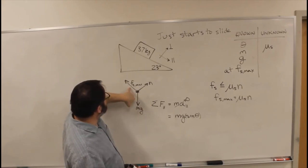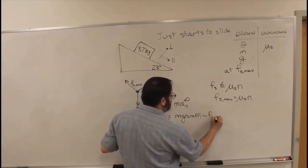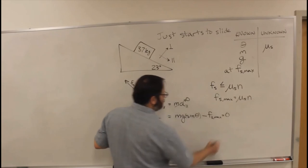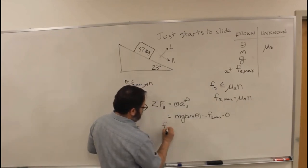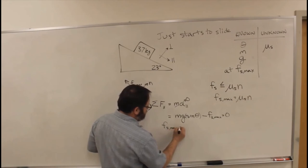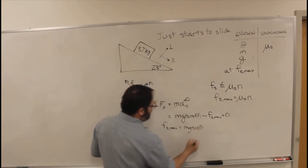And then we've also got this Fs max, that's the opposite direction, minus Fs max equals zero. I can rearrange this. Fs max equals mg sine theta.